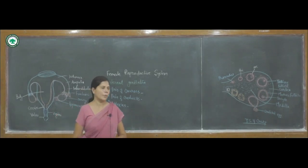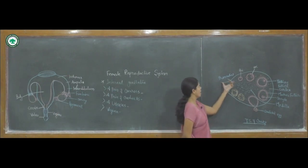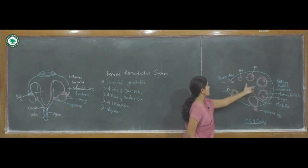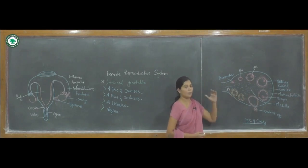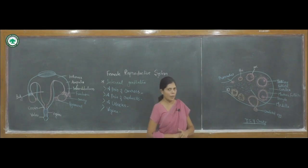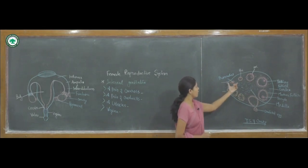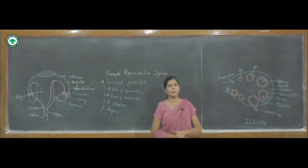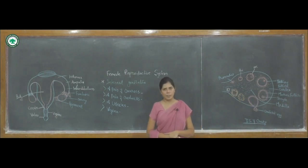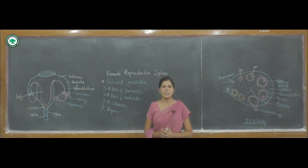Before the birth of a female baby, millions of follicles are present inside the ovary. The development is carried out before the birth, but the primordial follicles are further developed at the age of puberty.